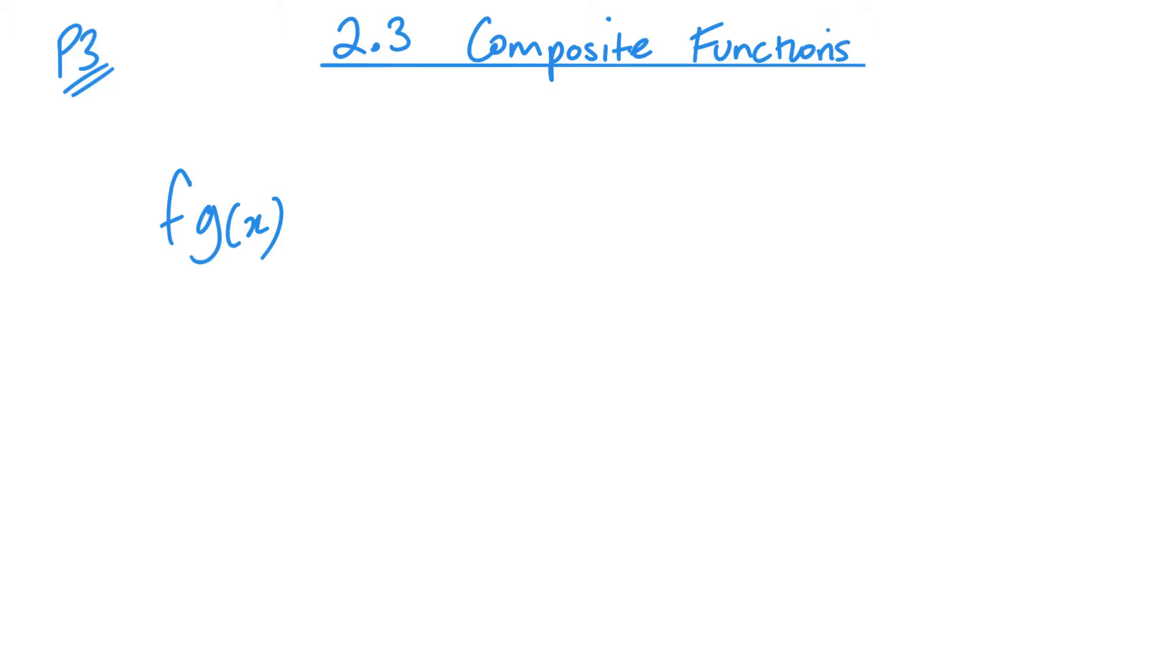So let's look at this function here. This is essentially when we combine two functions together. So fg of x, what it means is that you find f of g of x. What that means in itself is that you'd find g of x first and substitute that answer into f of x.